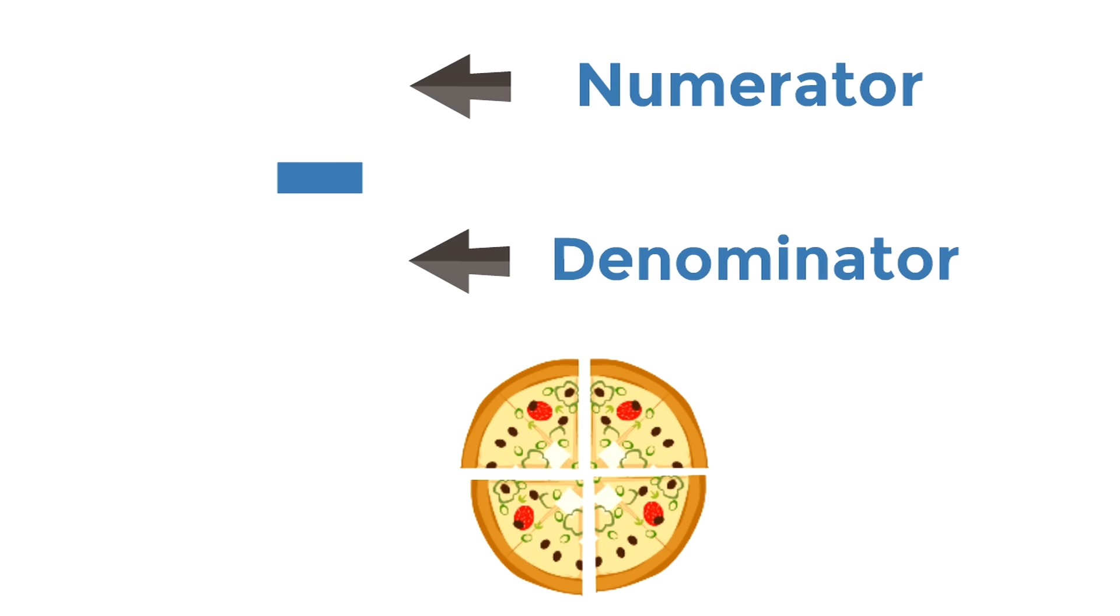Let's try this. Let's say there's another pizza and this pizza has four parts. The number four is the denominator because there are four pieces of pizza, four parts.